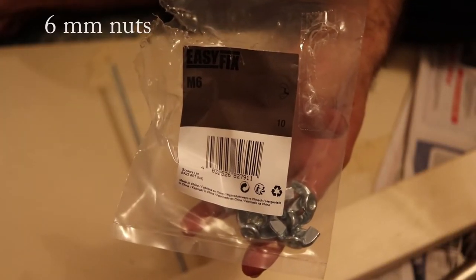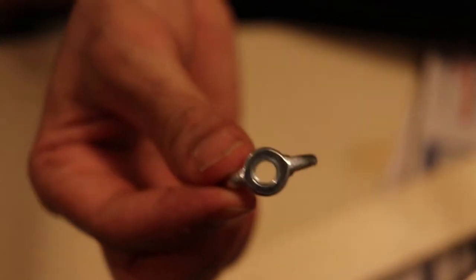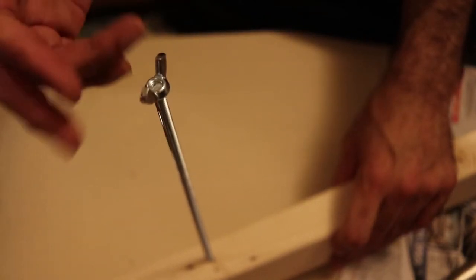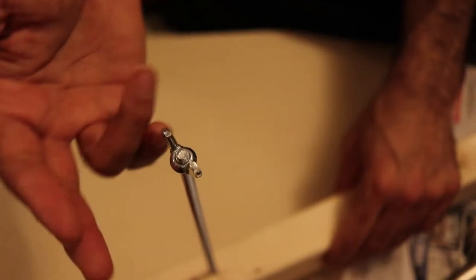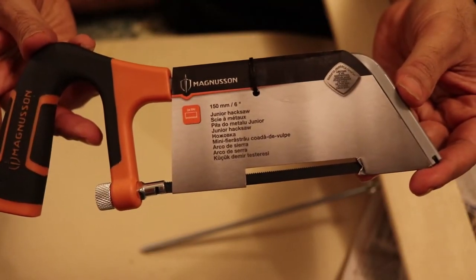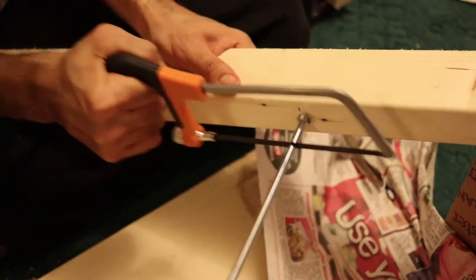We also need 6mm nut to match the screw. Put the nut on the screw and turn it around. Another thing that we need is a junior hacksaw. Now we cut that extra loose.